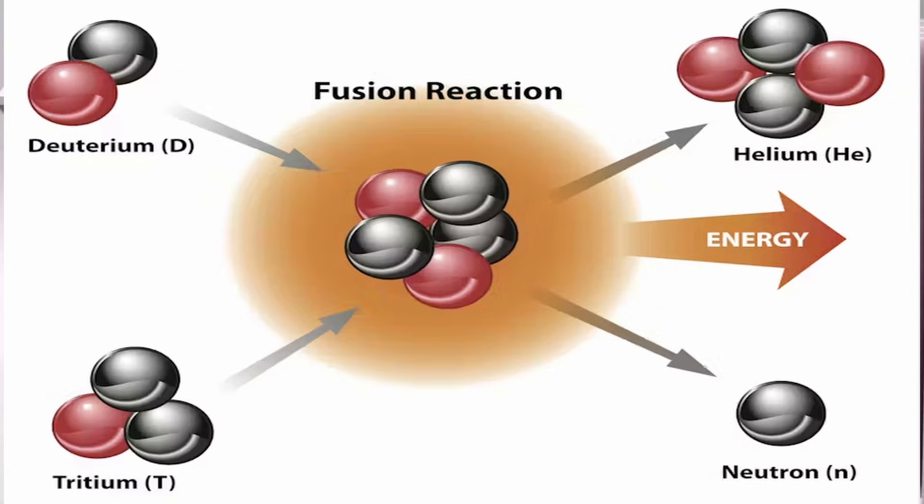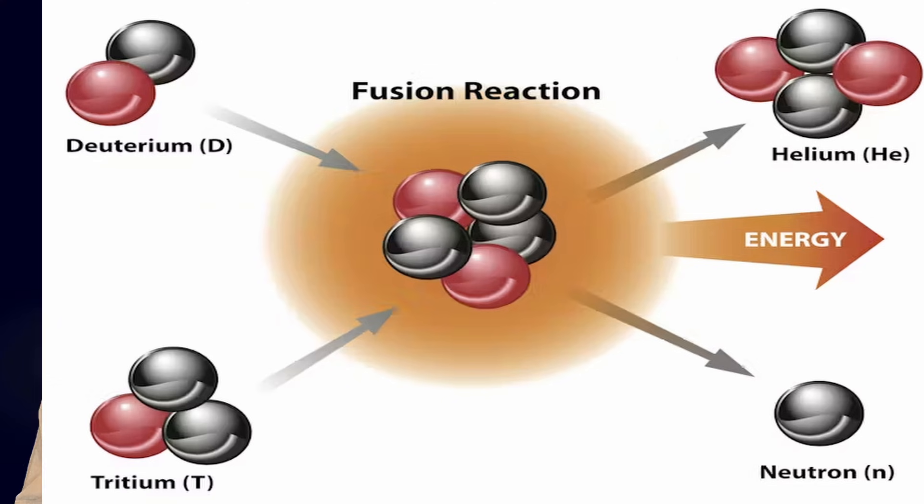and the much more difficult to obtain tritium, or T, with one proton and two neutrons. When the D and T fuse, you get a helium-4 nuclei and a single neutron. 80% of the energy is carried away by the uncharged neutron. Since the neutron is uncharged, it flies right out of a magnetic bottle, unaffected.